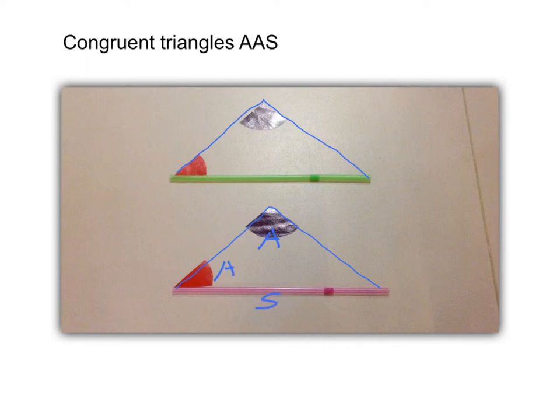Look that this order is very important. AAS is different from ASA where the equal side is included between the two equal angles. Now the equal side is right here and the two equal angles are on this side. So this is AAS.